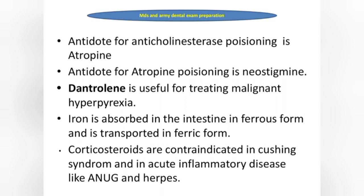Iron is absorbed in the intestine in ferrous form and is transported in ferric form. Corticosteroids are contraindicated in Cushing's syndrome and in acute inflammatory diseases like ANUG and herpes.